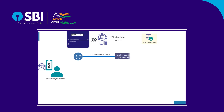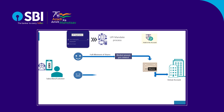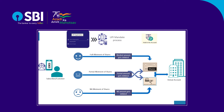In case of full allotment of shares, the blocked amount will get debited from your bank account. In case of partial allotment, money will be debited for the allotment value and the balance amount will be unblocked in the investor's account. In case the investor does not get any allotment, the amount blocked in the account will be unblocked. Under the UPI framework, the investor will be notified of the debits. In case of allotment, your DP account would get credited to the extent of allotted equity shares.